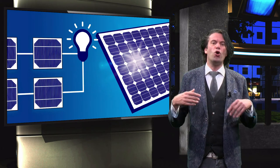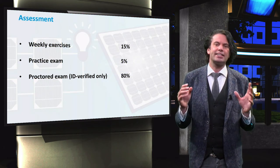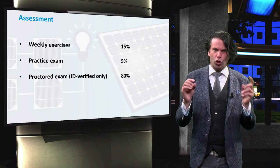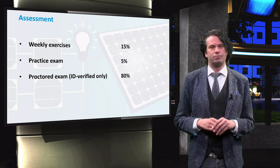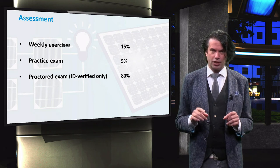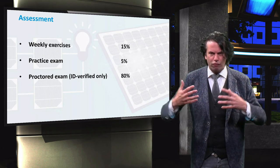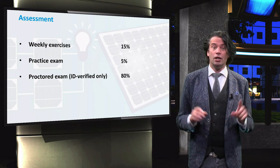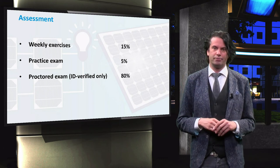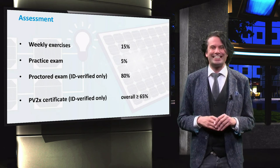Now the assessment. Following most of the video lectures you will find exercises to apply your newly gained knowledge. These exercises are meant to test and improve your understanding of the concepts discussed in the videos. All the weekly exercises combined count for 15% toward your final grade. The practice exam counts for 5% of your final grade and is meant for students to practice and get familiar with the format of the proctored exam. The proctored exam is only available to ID verified students and counts for 80% towards your final grade. You can qualify for the PV2x verified certificate by achieving a minimum final score of 65%.